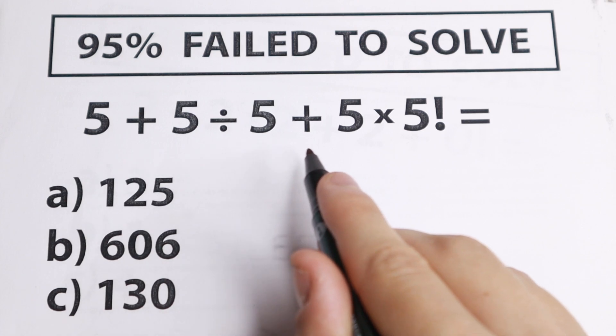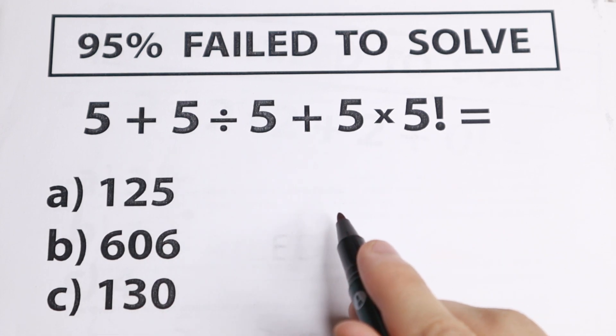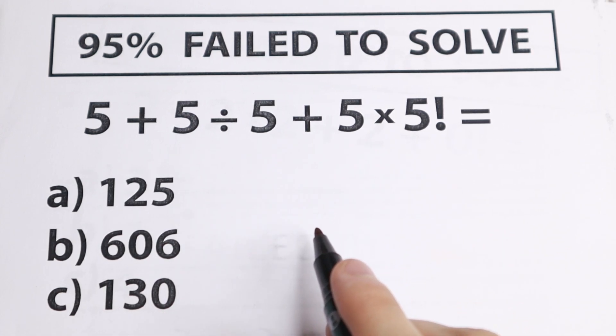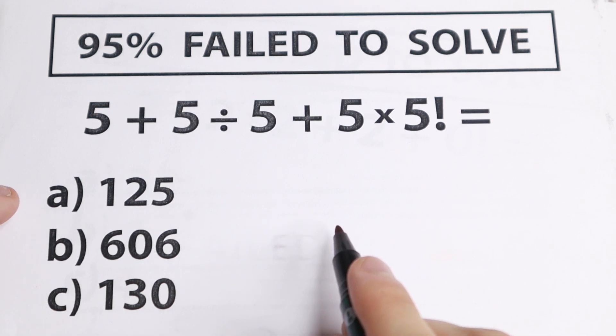We have 5 + 5 ÷ 5 + 5 × 5! equals what? But before solving this I suggest you to pause the video and try to solve it by yourself real quick. Try to choose one option. We have A, B, C, not a lot of options. So right now try to solve it by yourself.